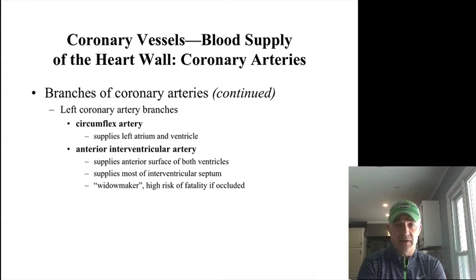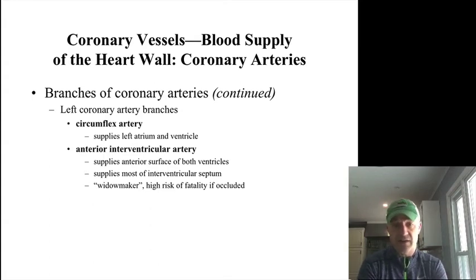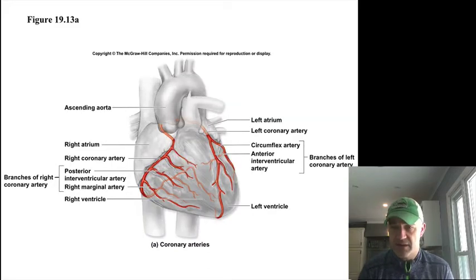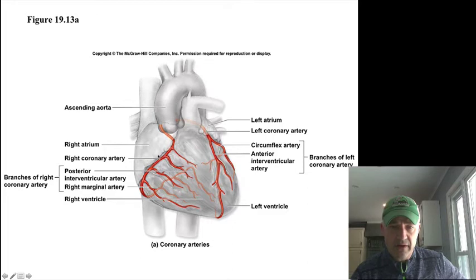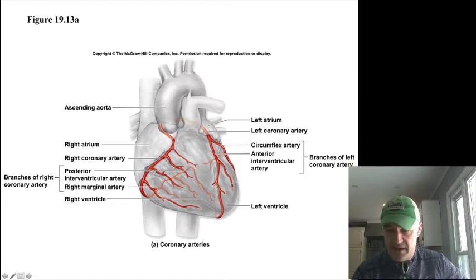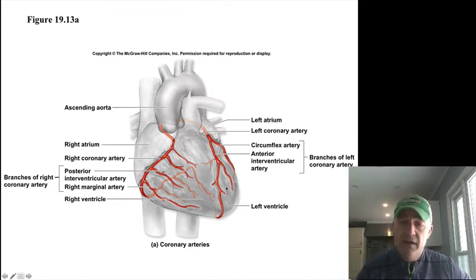A blockage or heart attack due to a blockage in the anterior interventricular artery is called a widow maker, mainly because the risk of death is usually quite high. You can see this best on this image — the left and right coming out, main right coronary artery, and the main branches. You can see the posterior interventricular on the backside, the circumflex going one direction, the anterior interventricular going here, and how it supplies a lot of the wall of the left ventricle.